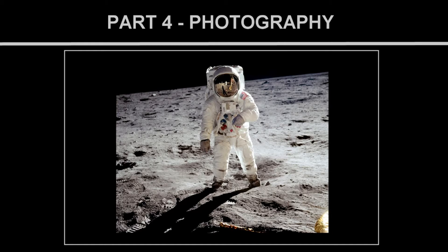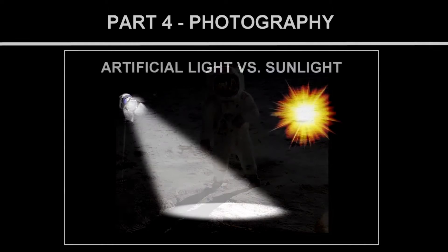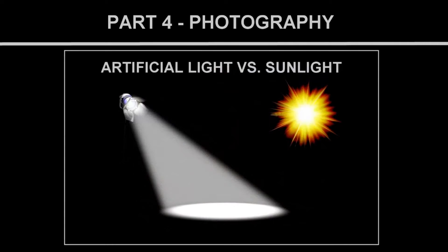Let's now examine the problems related to the type of lighting used for the lunar pictures. There are in fact different elements suggesting that an artificial source, rather than the sun, was used to illuminate the set. This would obviously mean that the pictures were taken on Earth and not on the moon.